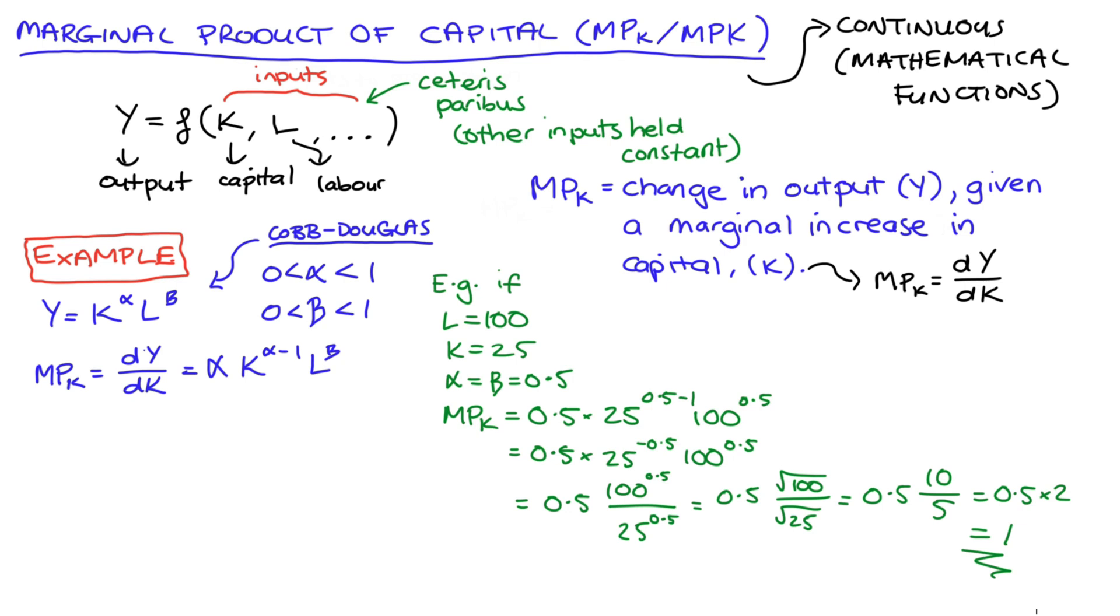So that's finding our marginal product of capital when our production functions are continuous equations. One thing that we might take notice of is the sign of our marginal product.